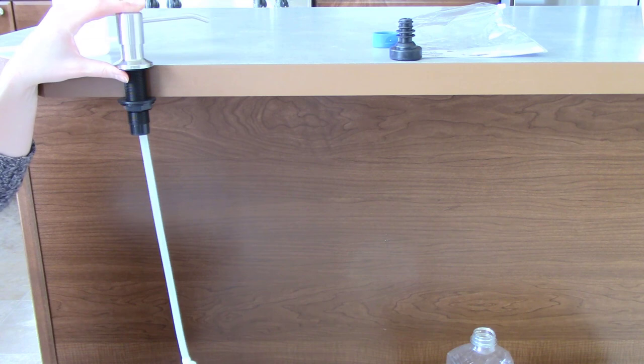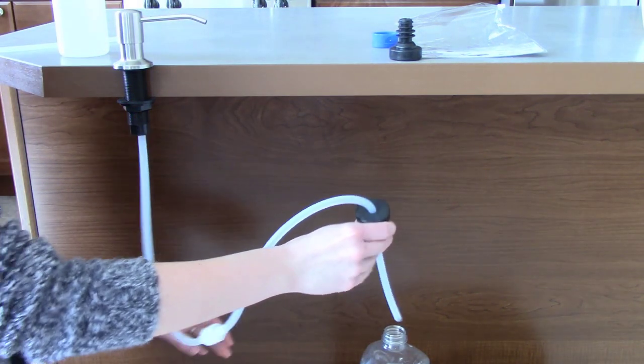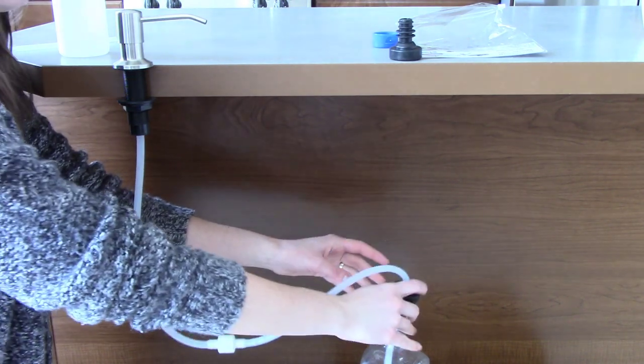Put the soap dispenser head back on. Then place the stopper onto your bulk soap container and make sure the tubing reaches the bottom of the container.